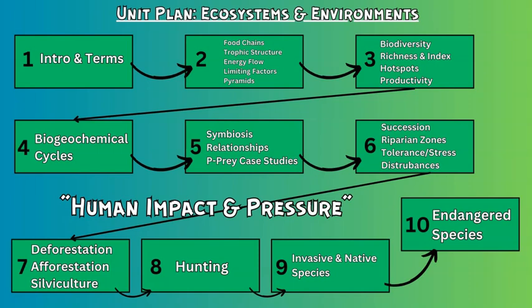Then we're looking at symbiotic relationships, looking at the different types and finishing up with predator-prey case studies and a lab. Then number six looks at succession in terms of primary and secondary, riparian zones, the tolerance of environment, stress levels, and disturbances — both natural and man-made or anthropogenic.